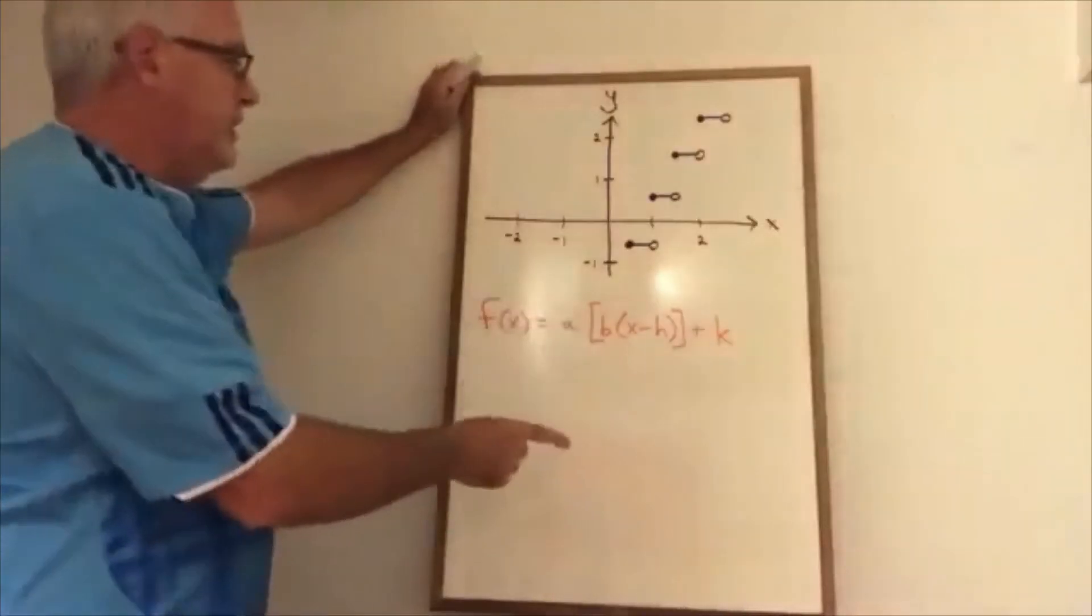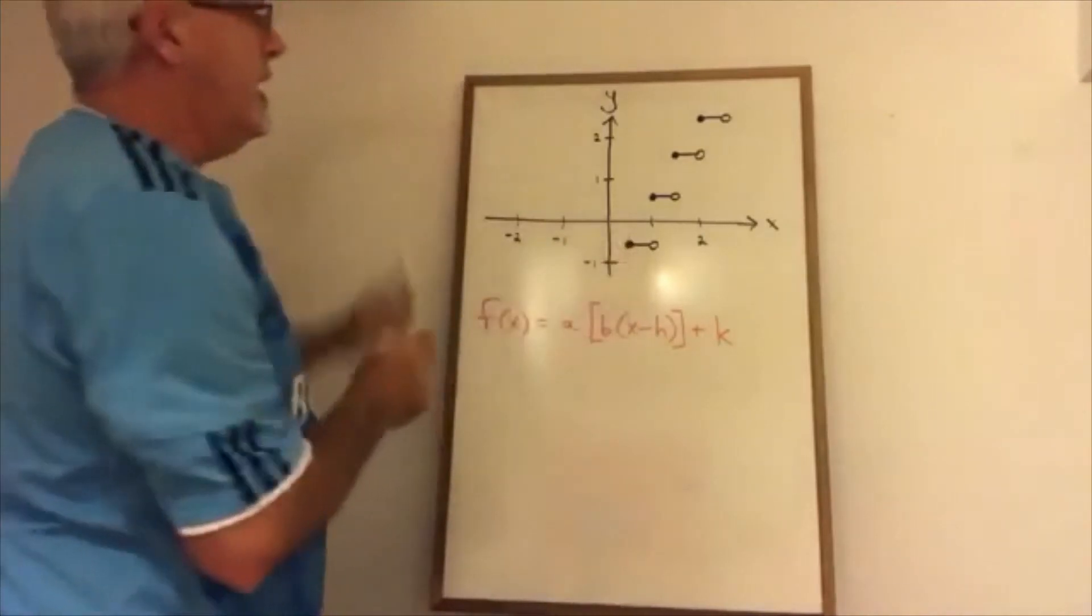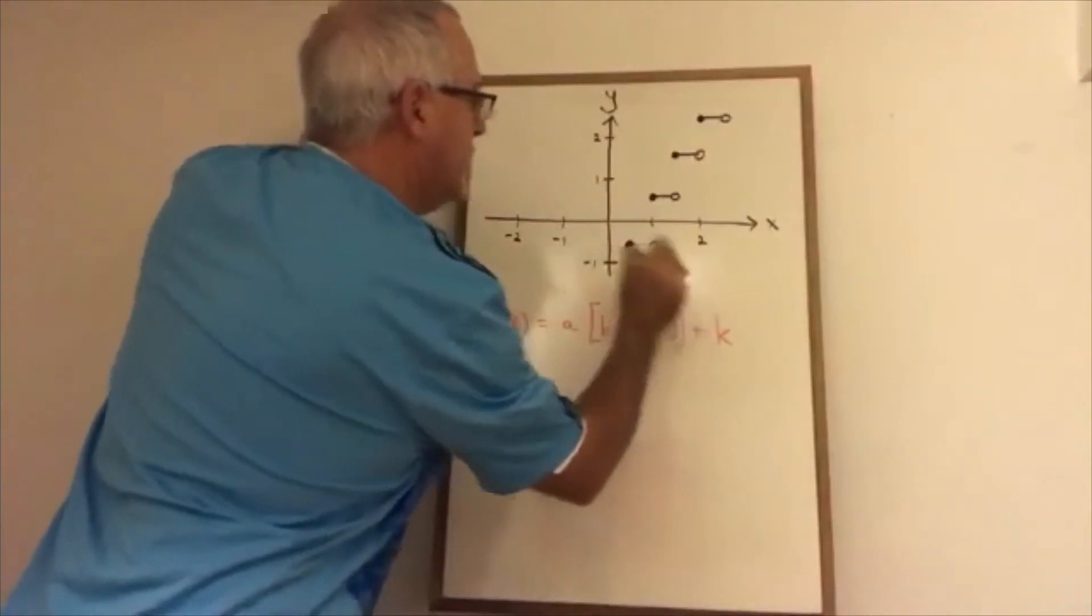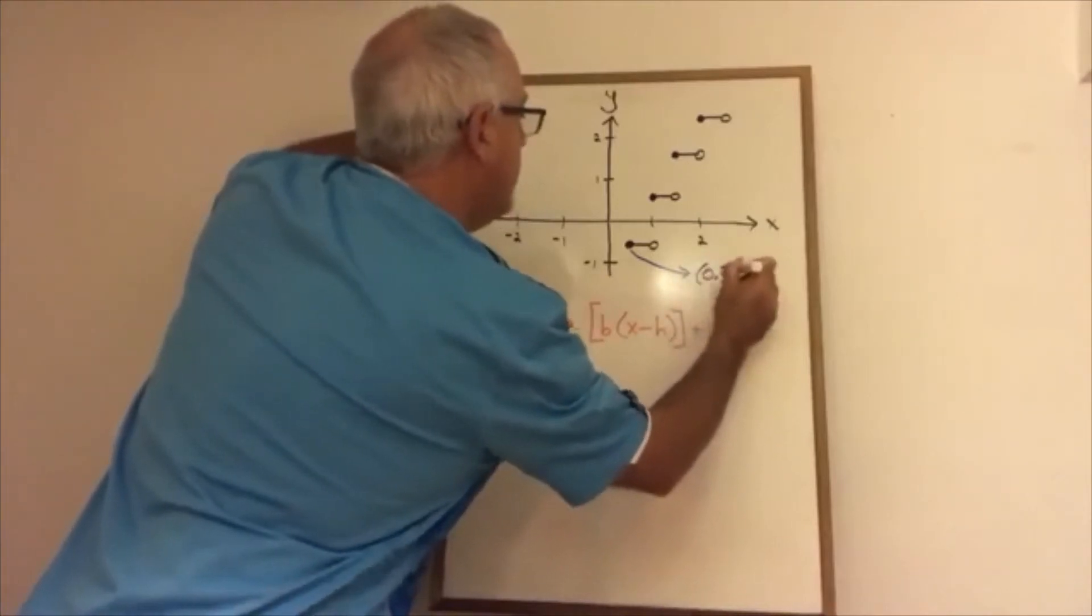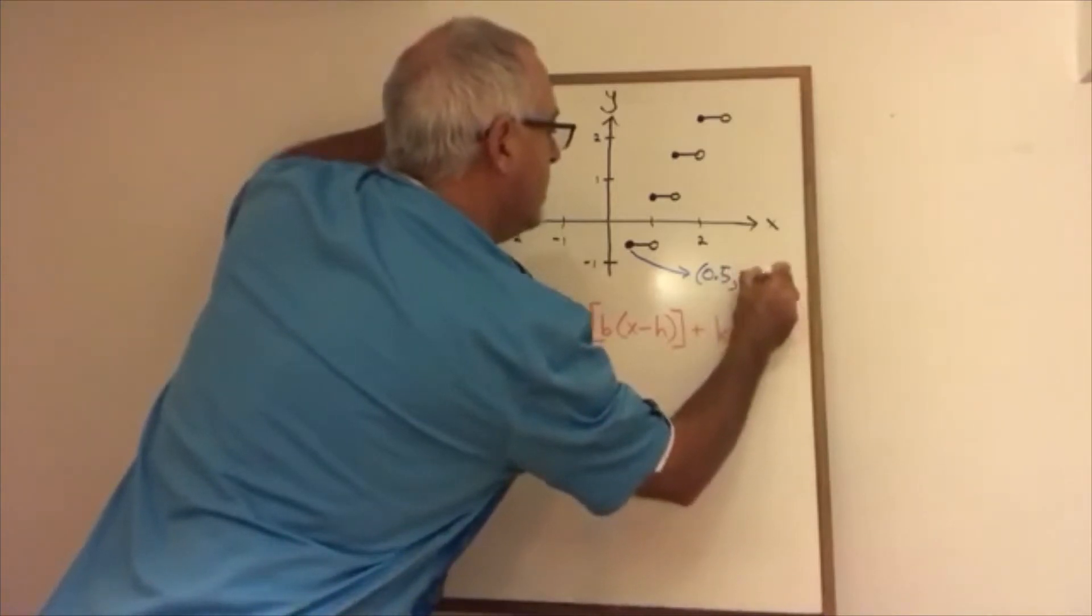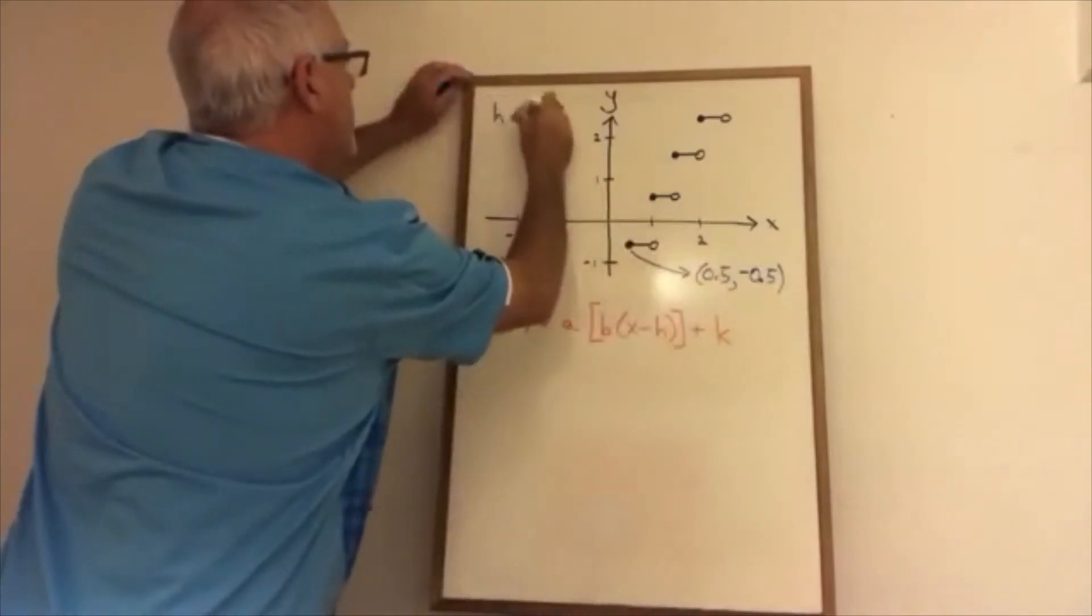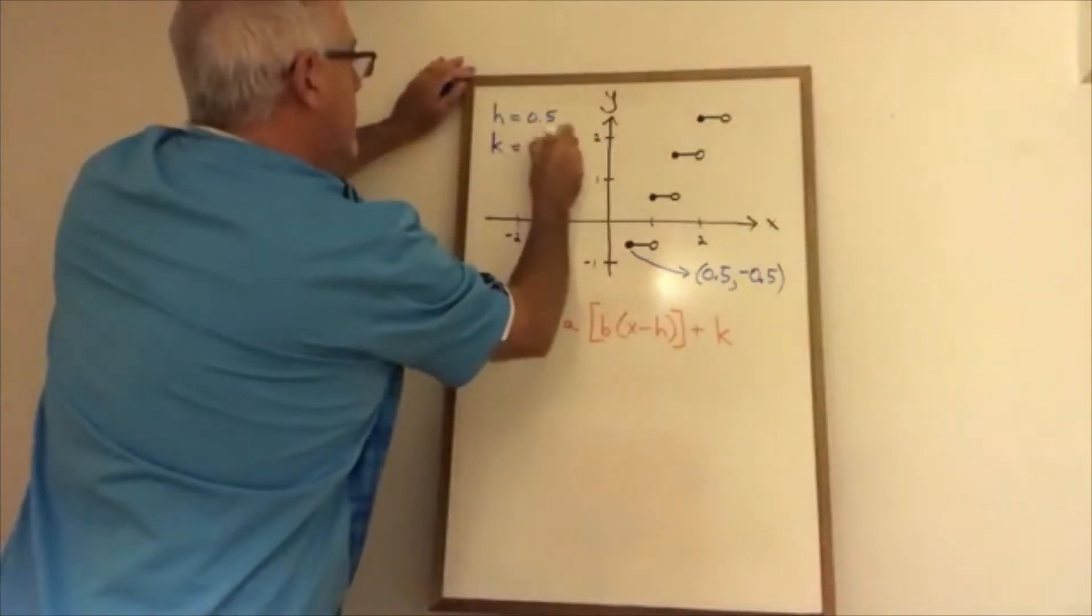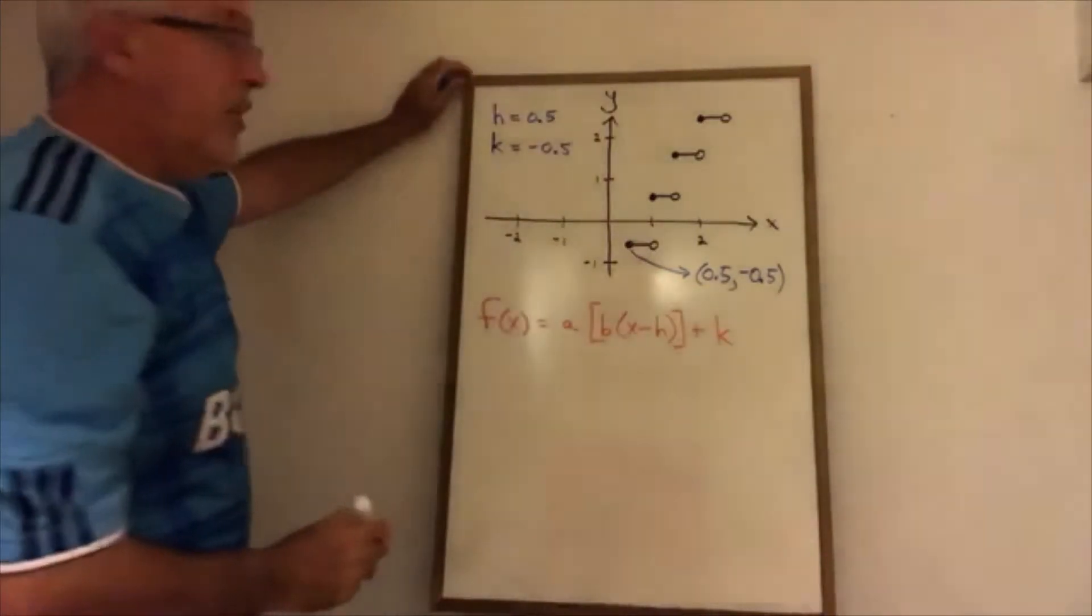Okay, so what we have to do first in this process is choose a closed circle that is close to the y-axis. I'm choosing this one and find its coordinates. So this closed circle would have the coordinates 0.5, negative 0.5. Therefore h is 0.5 and k is negative 0.5. Well, we're halfway there.